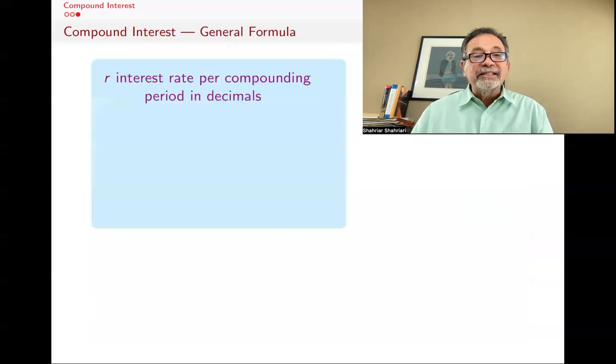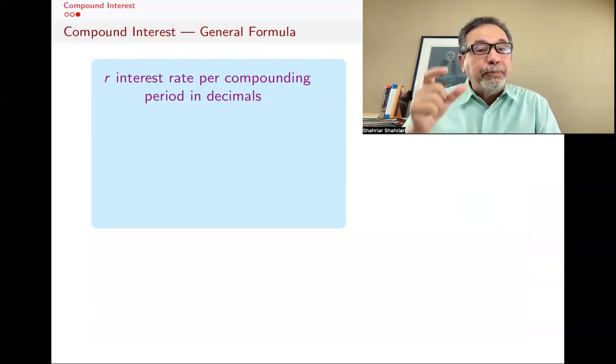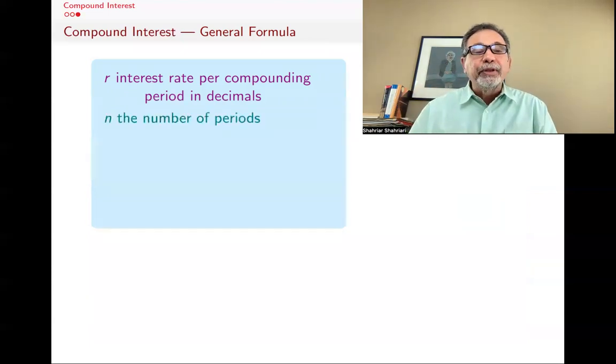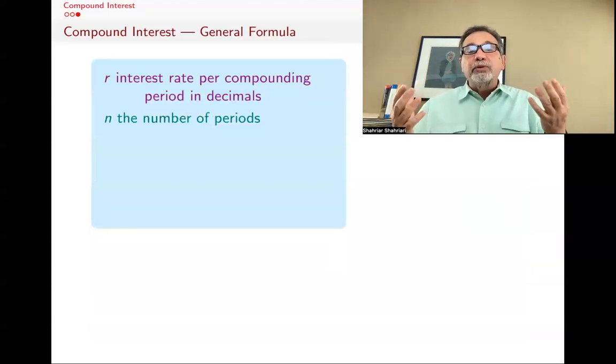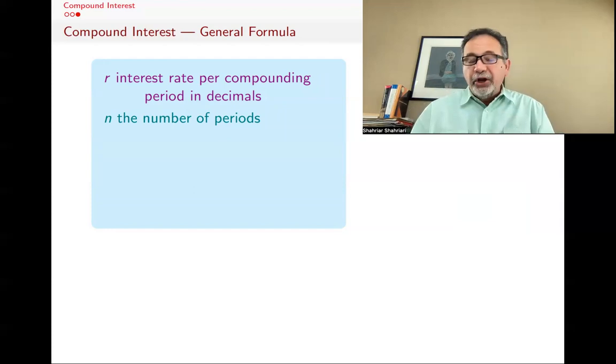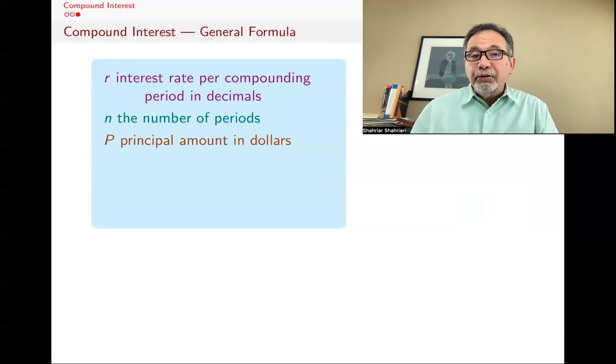Now, we can generalize this. If r is the interest rate per compounding period in decimals, so usually banks and other places give you the interest rate as annual interest rate, but depending on how they compound it, you have to figure out what the interest rate is per compounding period, and not as a percentage, but as a decimal. And n is the number of those periods. You might be thinking in terms of years or months or days, but you have to do it in terms of the periods. How many compounding periods are there?